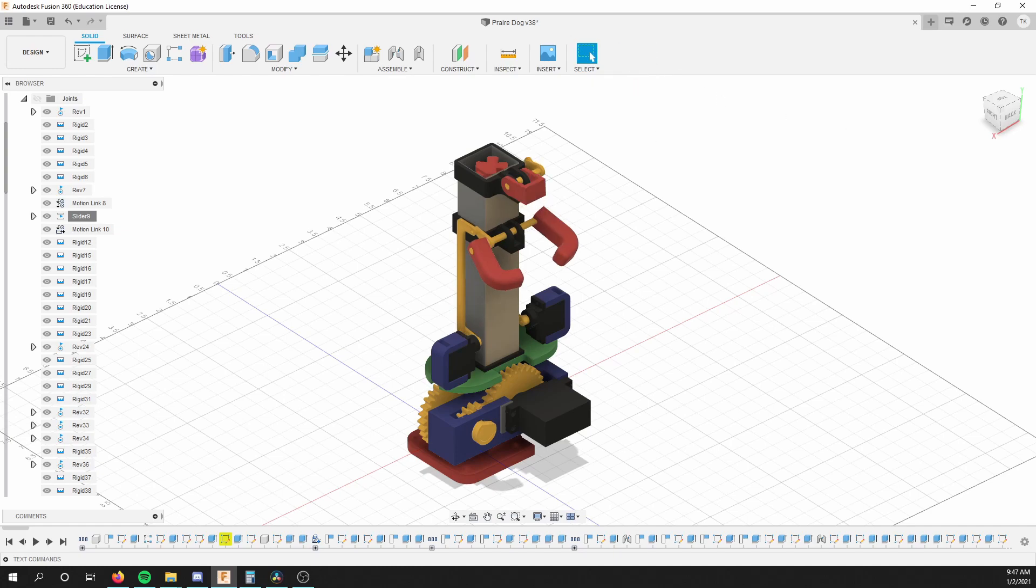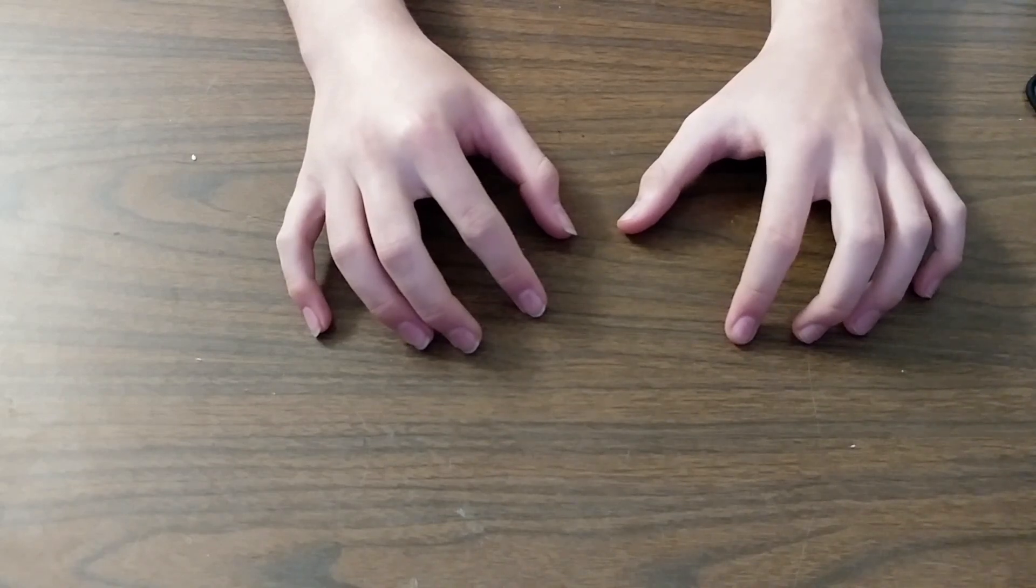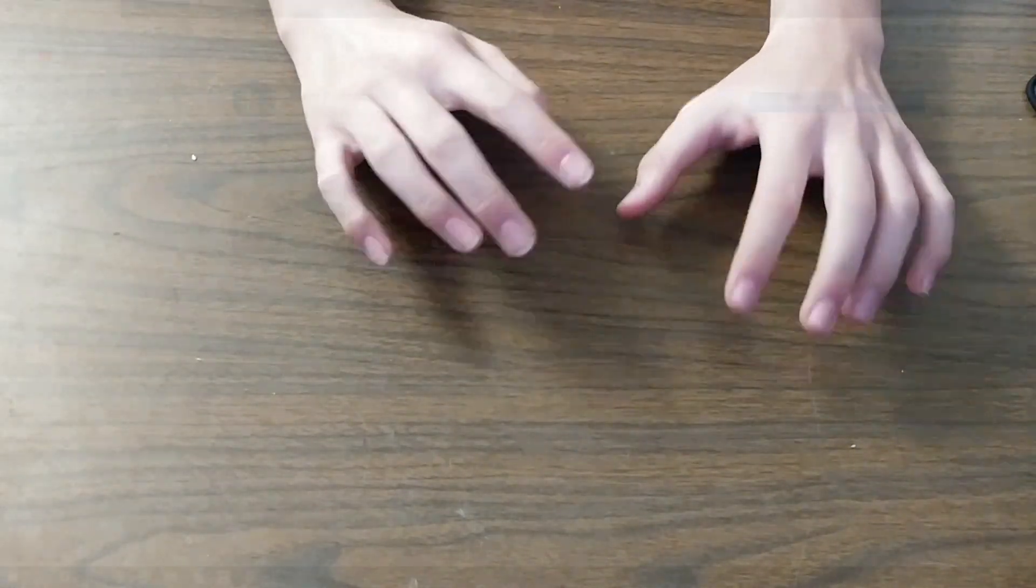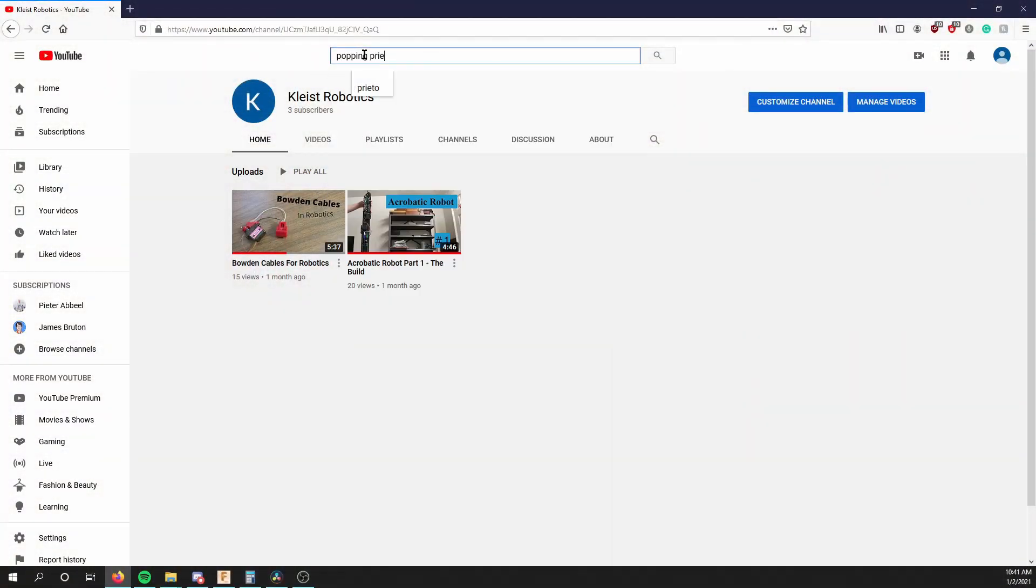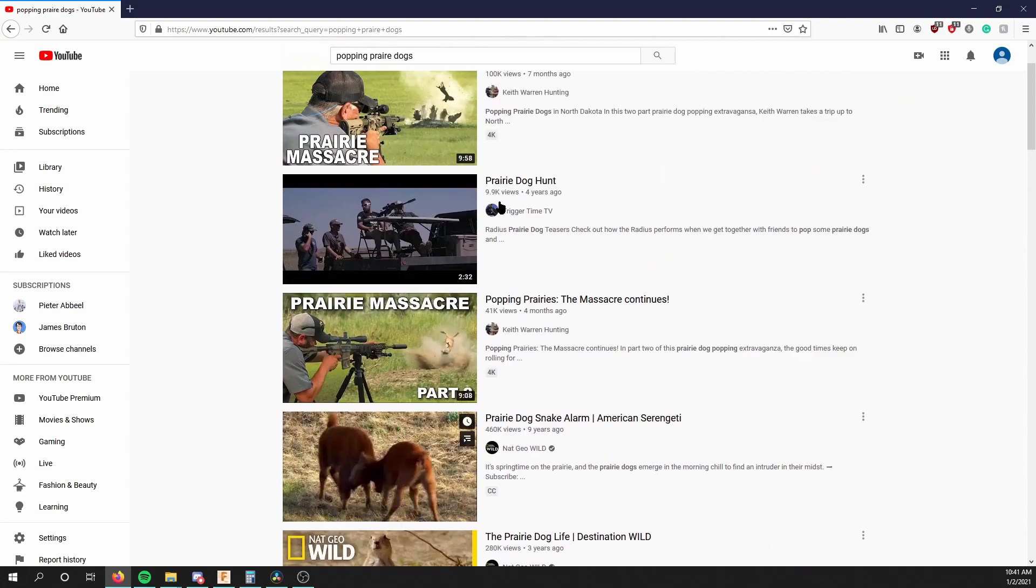So, in this video, we're going to take a deep dive into the lift function. The most important thing to know about it is that it is the function that controls him moving in and out of his hole. On a side note, do not search for popping prairie dogs. It's not at all what you want it to be. Kind of gory.